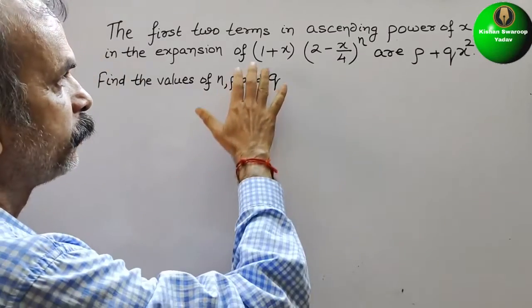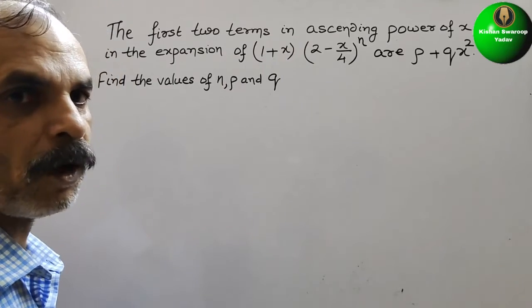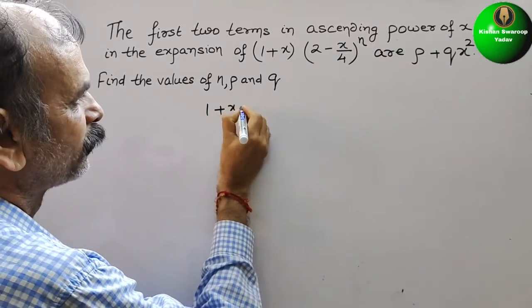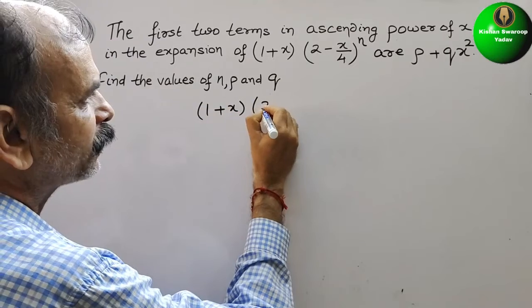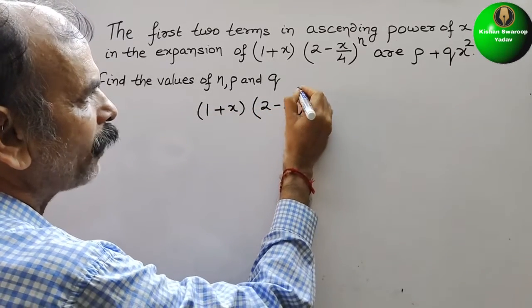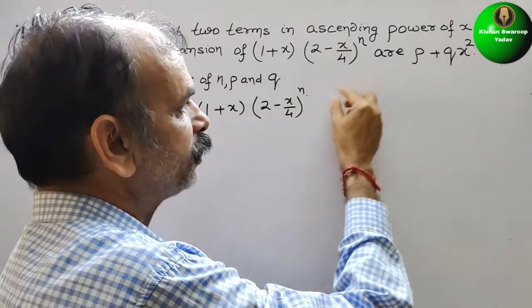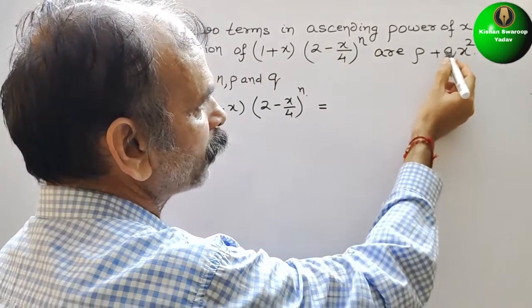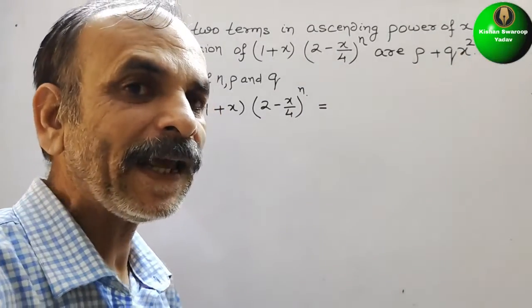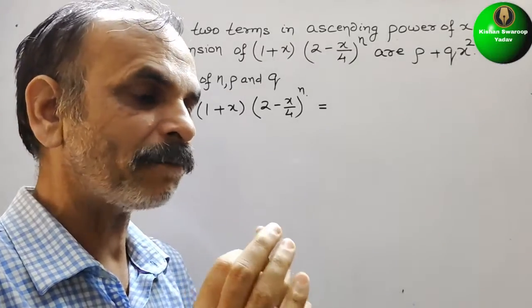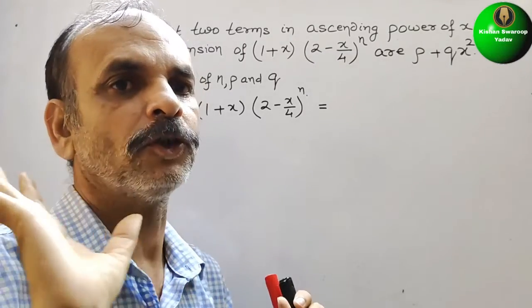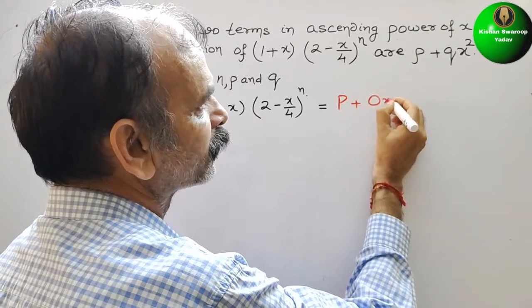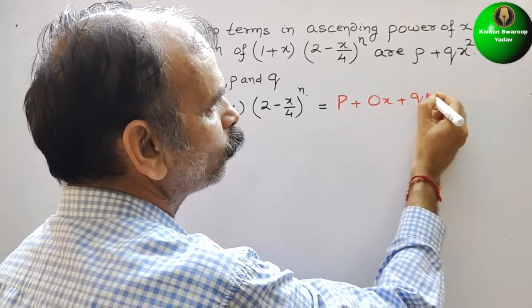They are given in the form of a multiplication: (1 + x) and (2 - x/4) to the power of n. This is equal to p + qx². Notice that x is not there as a standalone term, which means the coefficient of x is 0. So we rewrite it as p + 0x + qx².